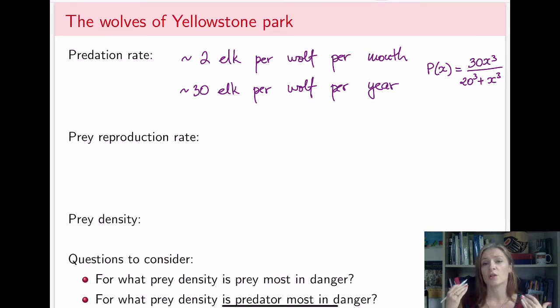If the predator starts killing off too much prey, more than are actually being reproduced, then the prey eventually will also get killed off, which is not the situation we want to find ourselves in. So for the prey production rate,